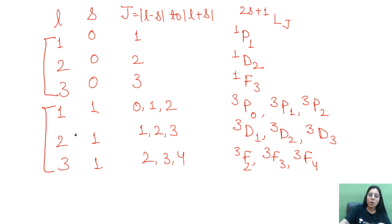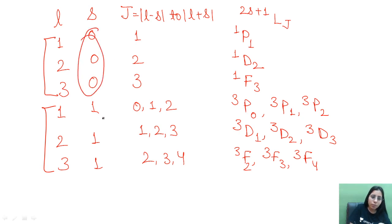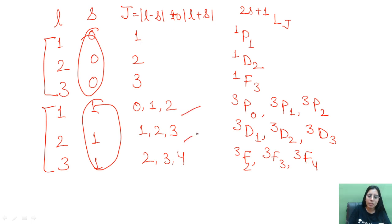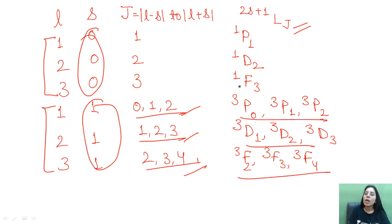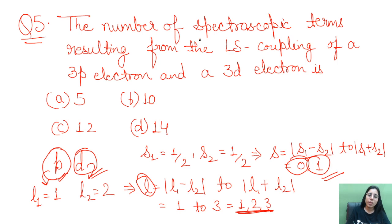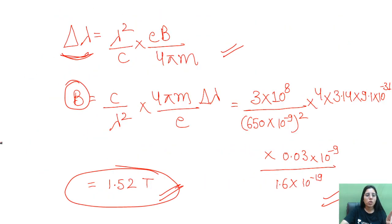For each combination of L = 1, 2, 3 and S = 0 or 1, we write the J values (from L−S to L+S) and corresponding spectroscopic terms. For S=0: ¹P₁, ¹D₂, ¹F₃ (3 terms). For S=1: ³P (J=0,1,2), ³D (J=1,2,3), ³F (J=2,3,4) — 9 terms. Total = 3 + 9 = 12 spectroscopic terms, which is Option C.